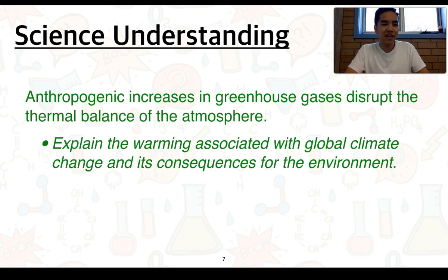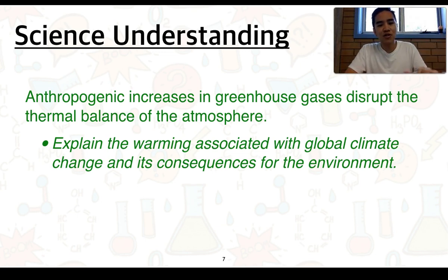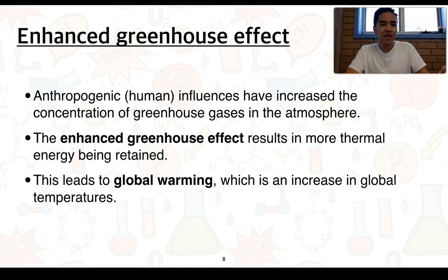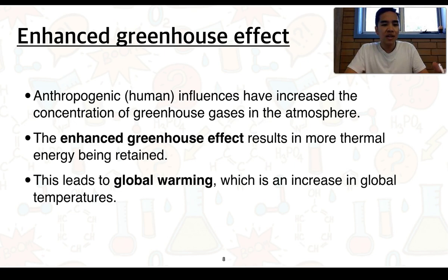Moving to the next understanding: anthropogenic increases in greenhouse gases disrupt the thermal balance of the atmosphere. We need to explain the warming associated with global climate change and its consequences for the environment. Anthropogenic, or human, influences increase the concentration of greenhouse gases in the atmosphere — the big one being CO2, or carbon dioxide. The enhanced greenhouse effect results in more thermal energy being retained, leading to a phenomenon we call global warming — an overall increase in global temperatures.